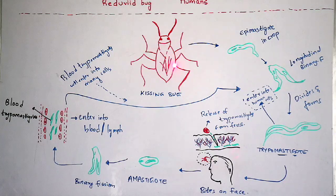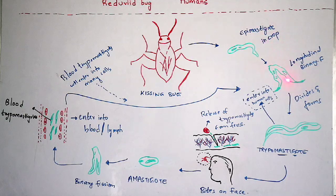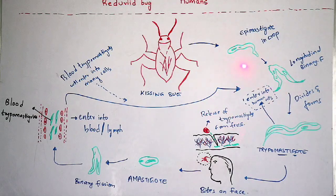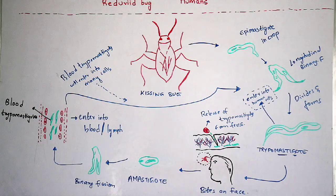Within the insect, there is a crop. Within the crop, there is a presence of epimastigotes, and these epimastigotes undergo binary fission. As this parasite belongs to the classification of Euglenoids, longitudinal binary fission takes place. This longitudinal binary fission within Euglenoids was also explained in previous videos — the link will be given in the description box. The epimastigotes present in the crop undergo longitudinal binary fission and form many daughter individuals.